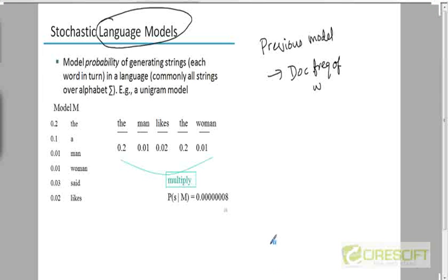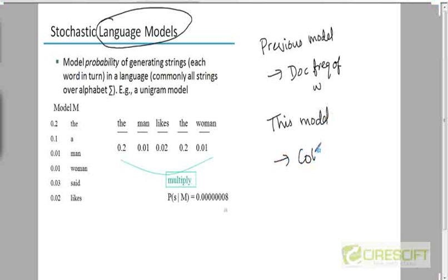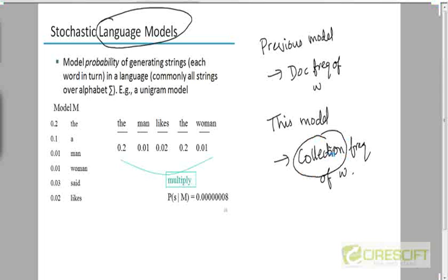We were computing how many times a particular word appears in documents of that class, where each occurrence of this word in a document just counts once — even if it appears multiple times, we just had a 1 or a 0 for it. In this model, we are going to look at the collection frequency — an estimate which corresponds approximately to the collection frequency of W. By 'collection' I mean all the documents associated with that particular class.